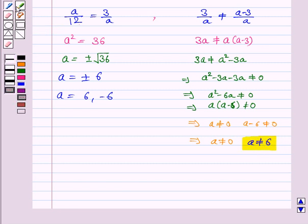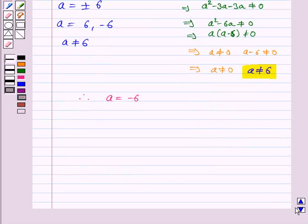So here also A is not equal to 6, so the only possible value of A is minus 6. Therefore A is equal to minus 6.